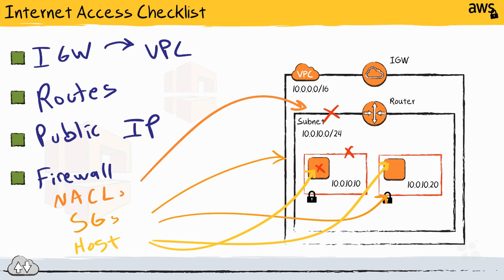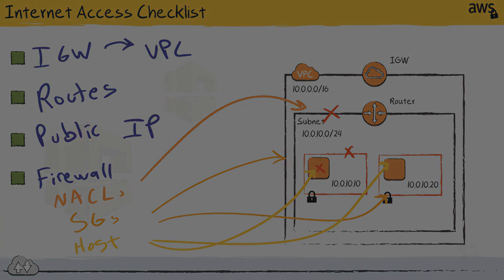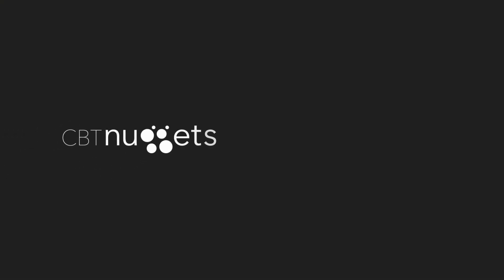Keeping this simple checklist in mind as you go through designing networks, troubleshooting problems, and securing your infrastructure should help in a number of ways. Be sure to check out my other AWS security lessons where we look at how to use these resources to drive isolation and improve security for AWS accounts and resources. I hope this has been informative for you, and I'd like to thank you for viewing.